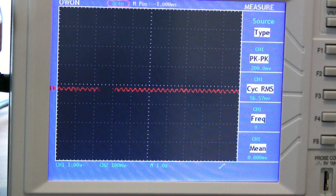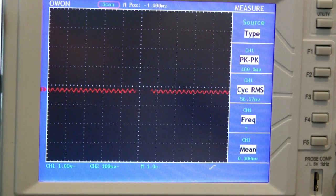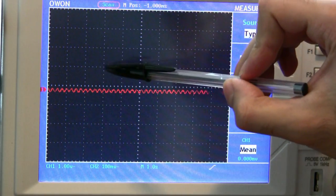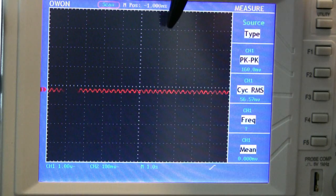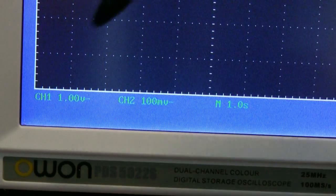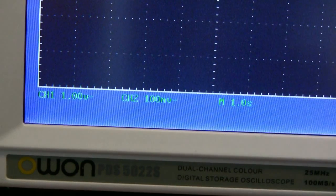The screen is evenly divided up into little squares or divisions. Each division represents a certain number of volts on the vertical axis. On the horizontal axis, each division represents a certain number of milliseconds or microseconds. Right now I have things set up to be one volt per division and one second per division for the sake of simplicity.